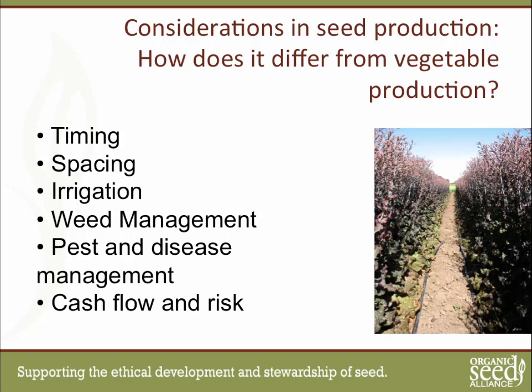If you don't allow for wider spacing in a seed crop, you'll have a much denser planting, which can allow diseases to spread more easily and make harvest harder.